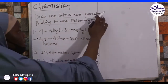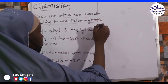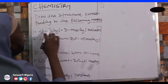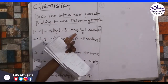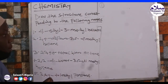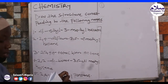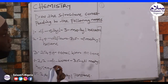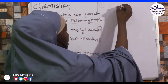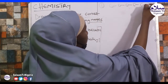Example 1, Number 1: 4-ethyl-3-methylhexane. The parent name is hexane, and hexane has 6 carbons. We draw the carbon chain: 1, 2, 3, 4, 5, 6.